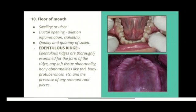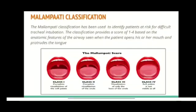For the floor of the mouth, any swelling or ulcer is noted. If any dilatation, inflammation, or sialolith is present in the ductal opening, it is recorded. We also look at the quality and quantity of saliva. In cases of an edentulous ridge, we thoroughly examine the form of the ridge, any soft tissue abnormality, and any bony abnormalities like tori or bony protuberances, as well as any remnant root pieces.